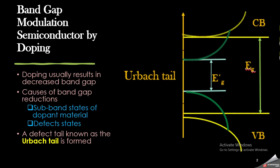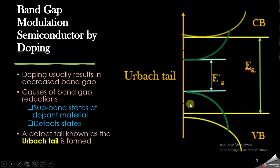Due to doping, the band gap — that is, the difference of energy between the conduction band and valence band — can be changed and decreased according to our application. Doping does two things: first, it creates subband states of the doping material, and second, it creates defect states in the material. Because of these defect states, a defect tail is created below the conduction band and above the valence band, so the actual band gap decreases to a new band gap represented by Eg'.